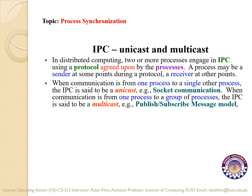Inter-process communication can only be performed under some predefined protocols on which both the sender and receiver agree before ensuring inter-process communication. A sender can be a sender at one time and a receiver at some other time. Inter-process communication has two common types: unicast and multicast.